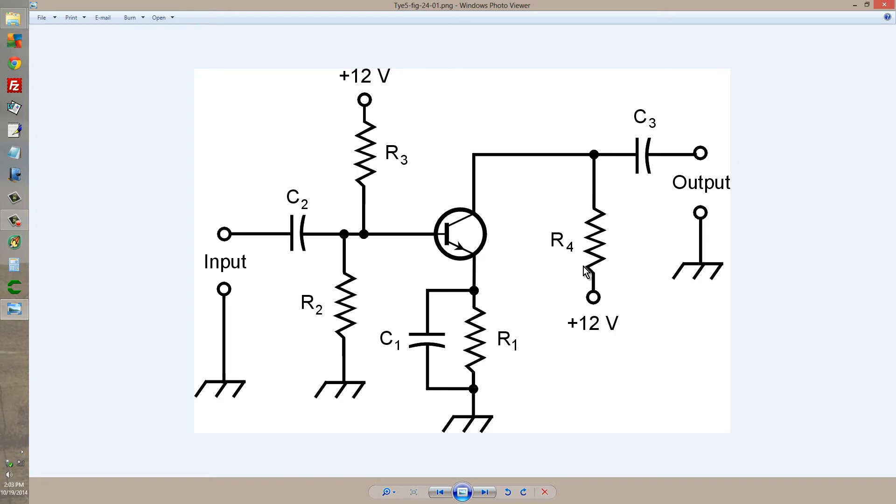R4 is the resistor that just serves as the mitigator between the collector and the positive 12 volt supply so that signal doesn't get shorted through this 12 volt supply in addition to providing the positive voltage. Then we have another blocking capacitor,